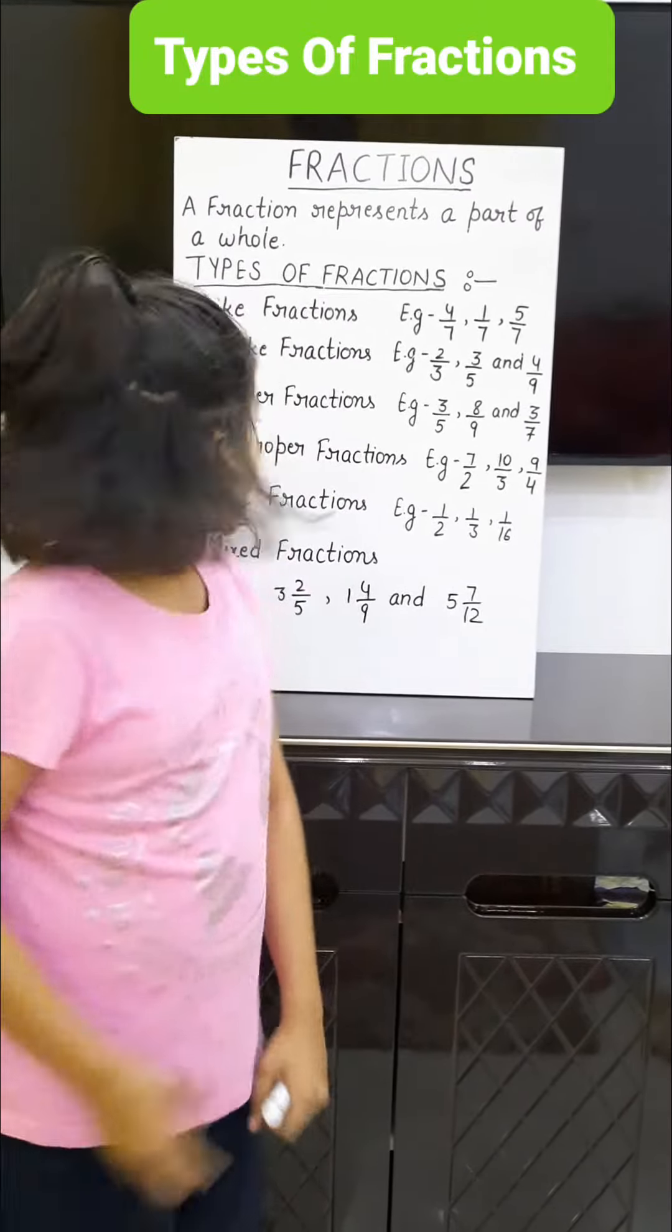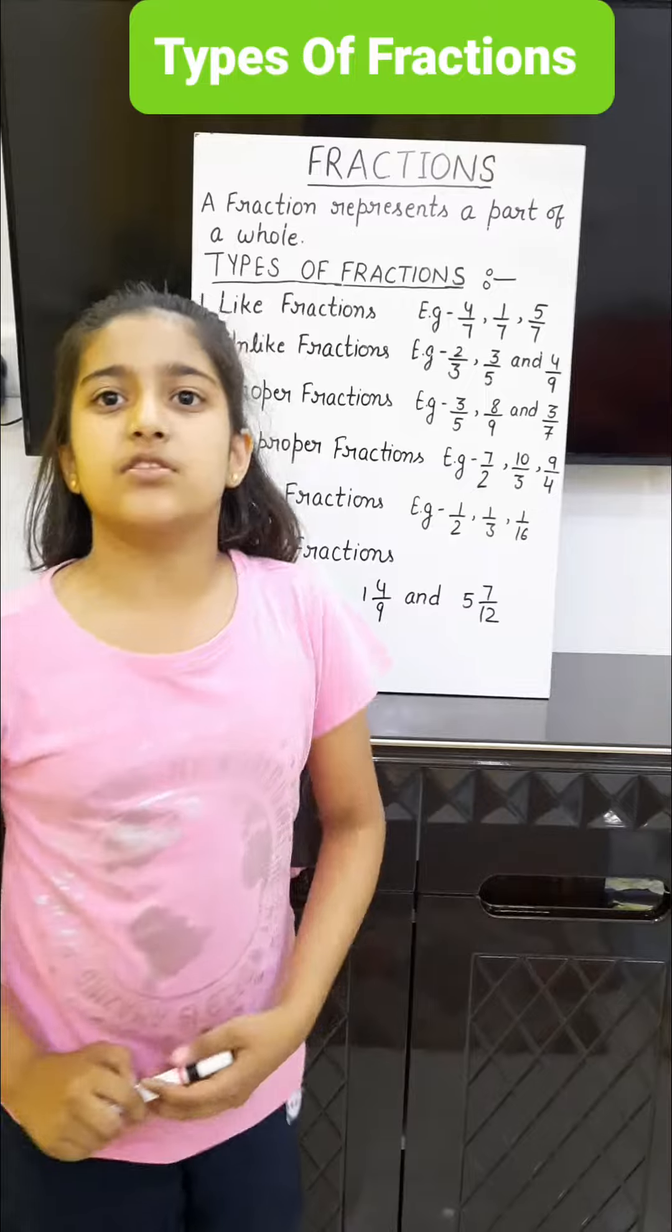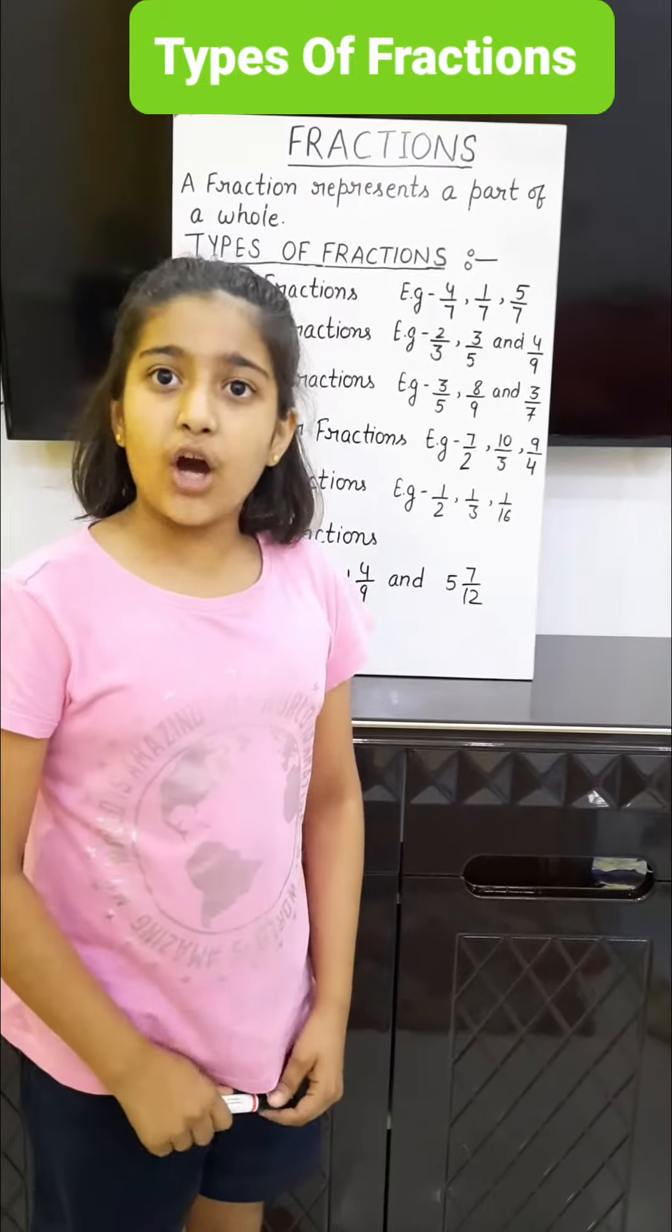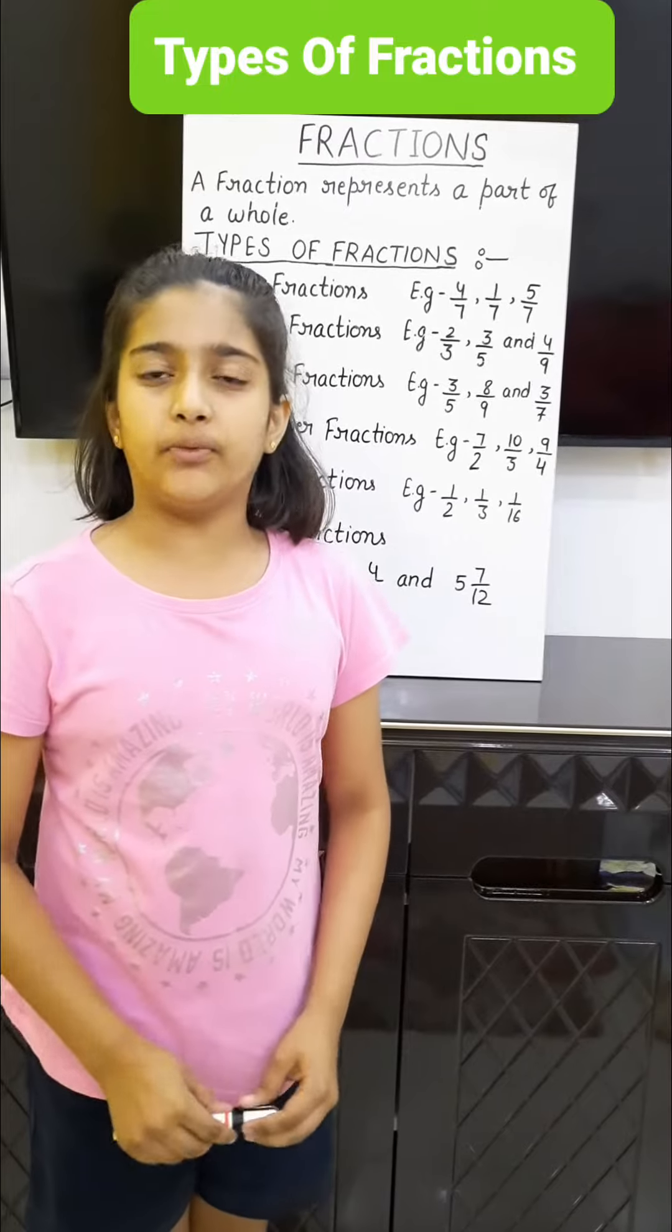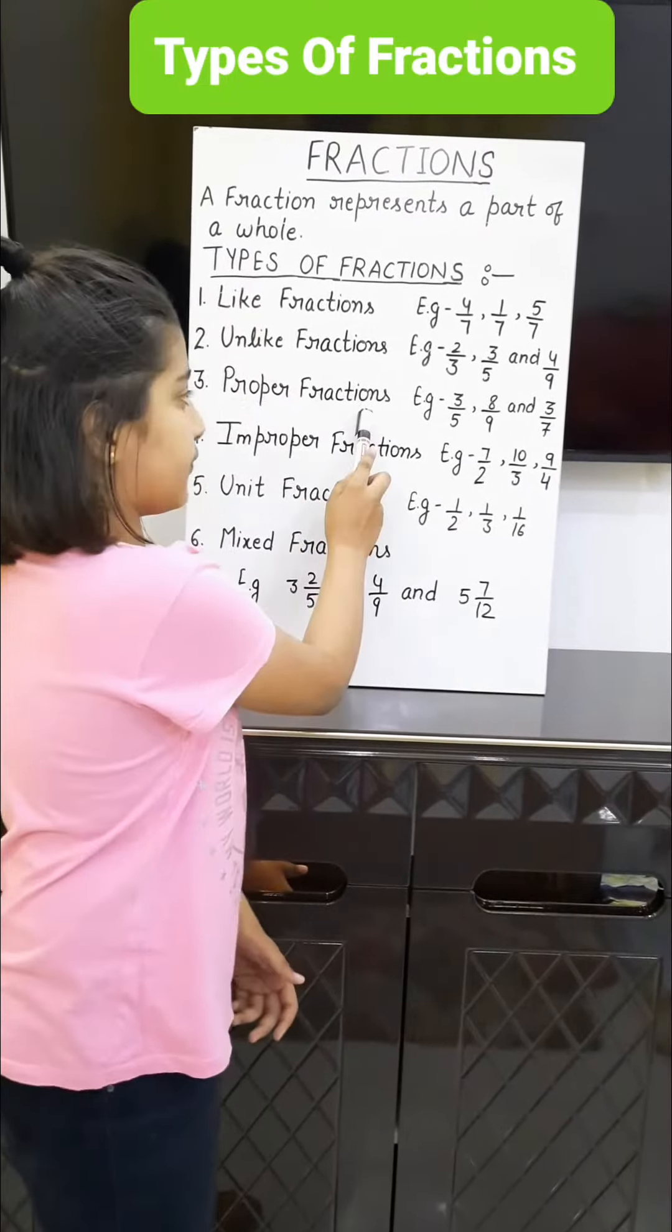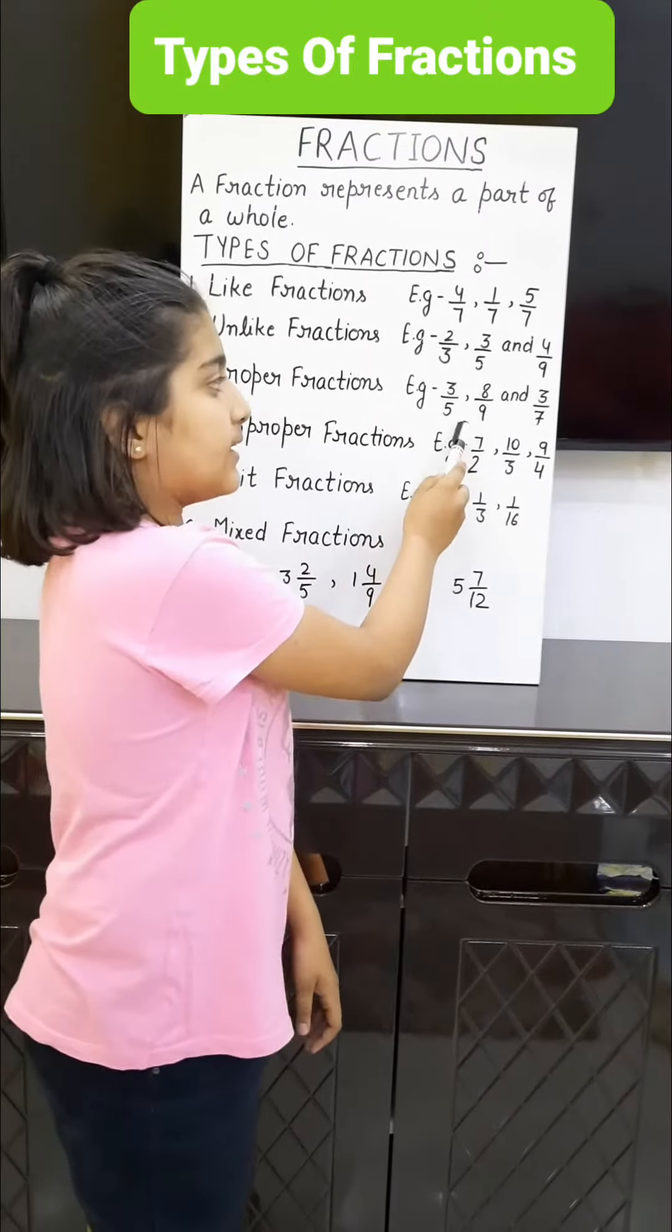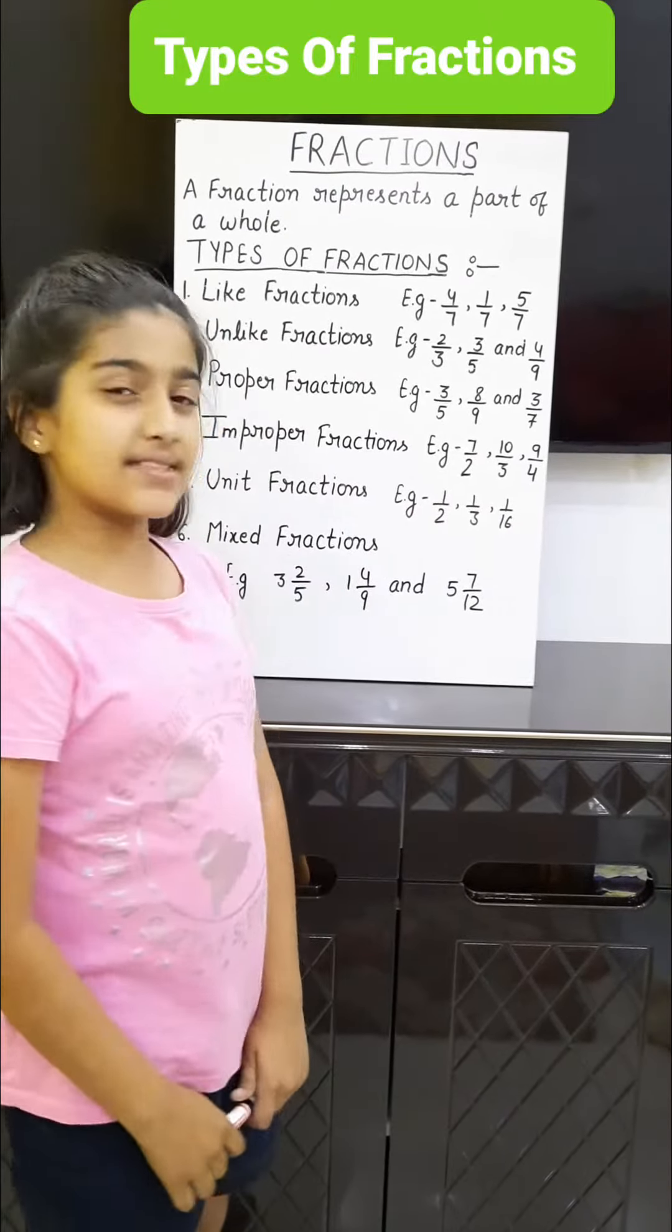Third, proper fractions: fractions in which the denominator is greater than the numerator. Example: 3/5, 8/9, and 3/7.